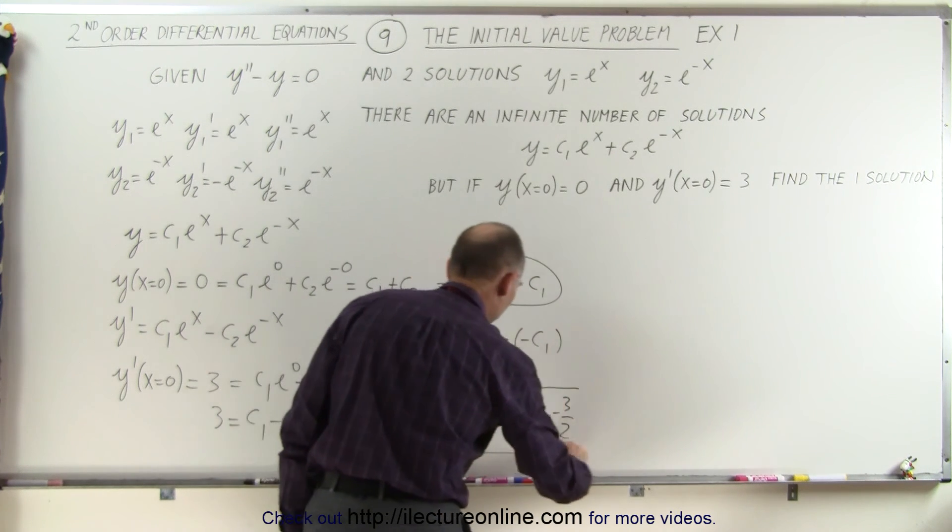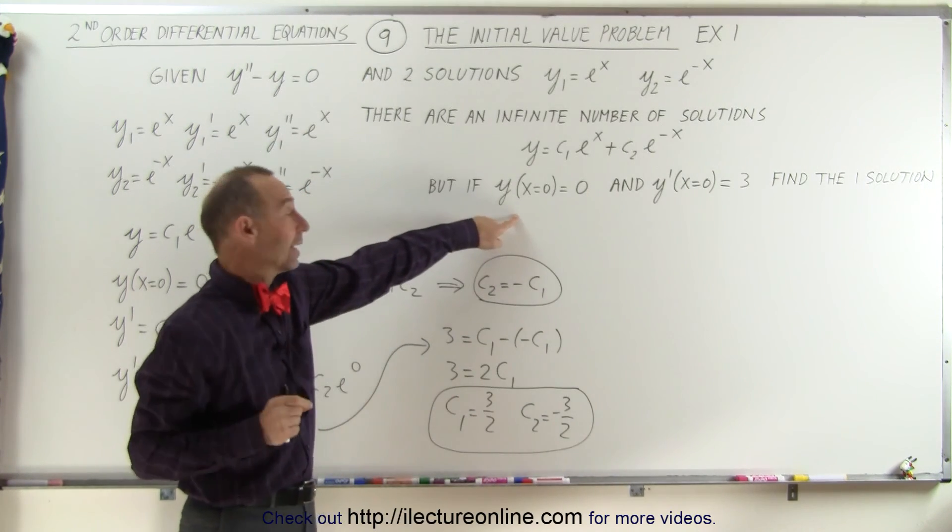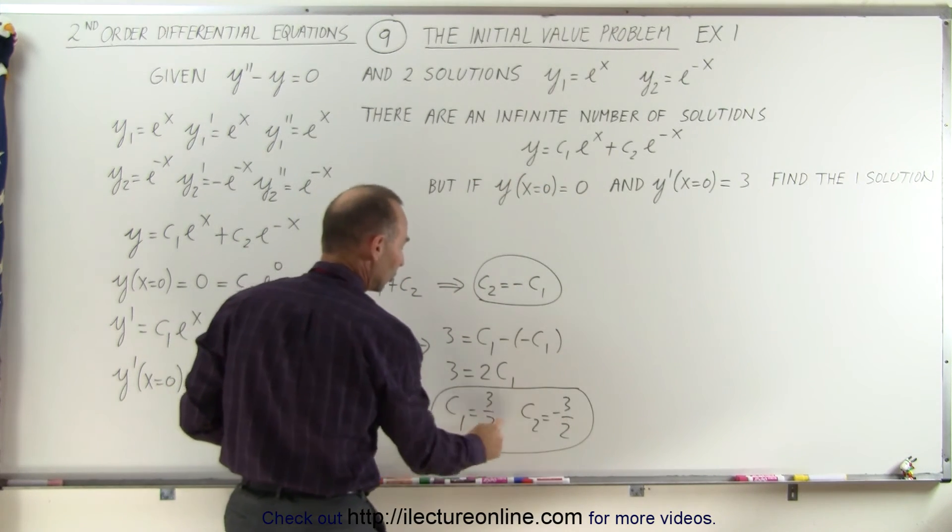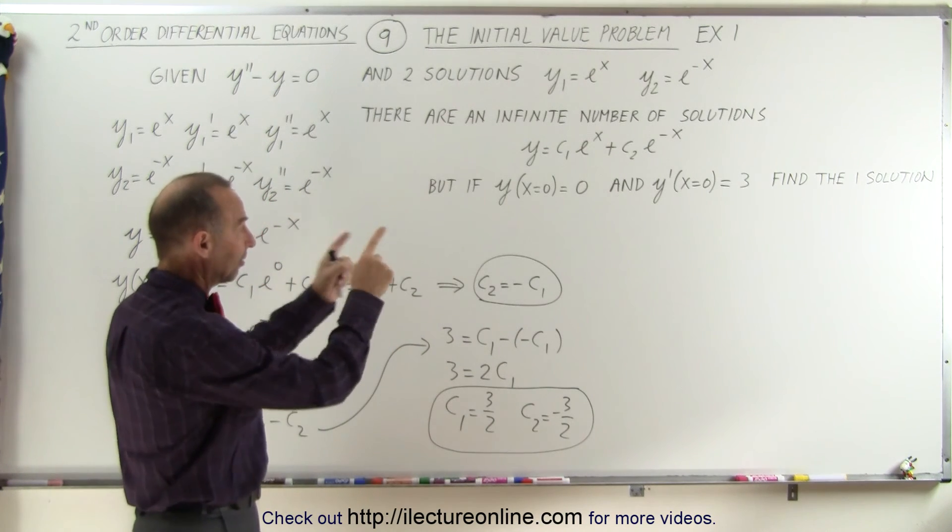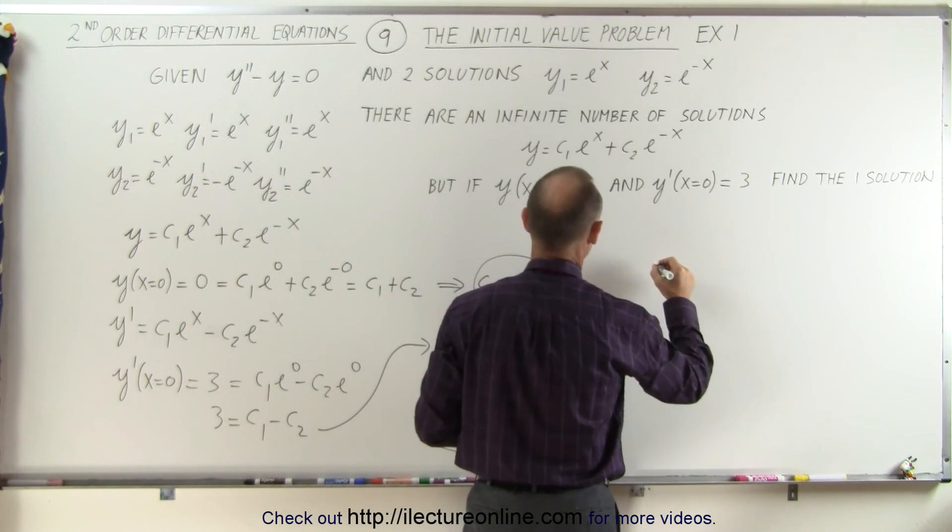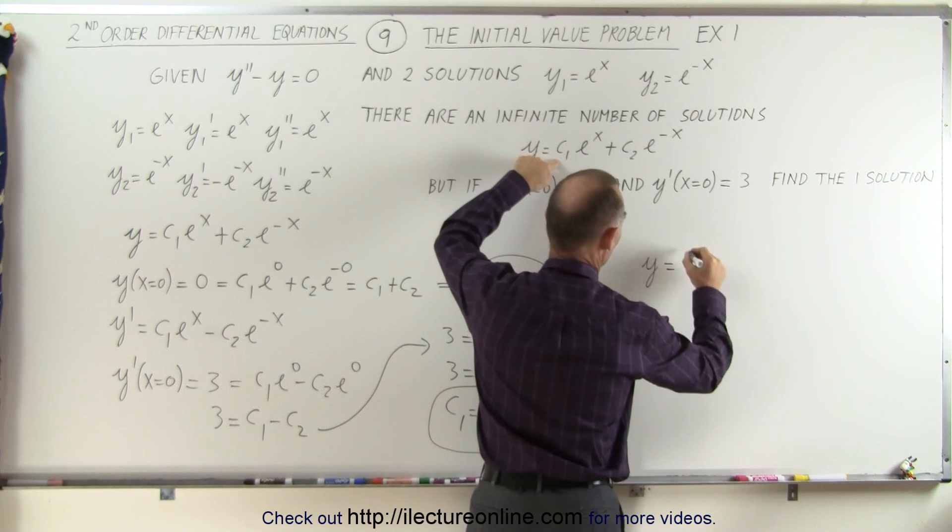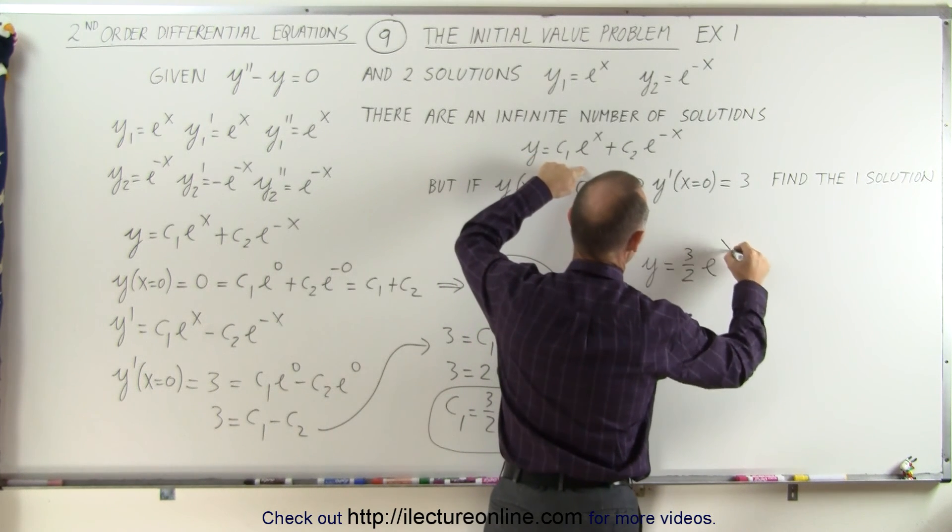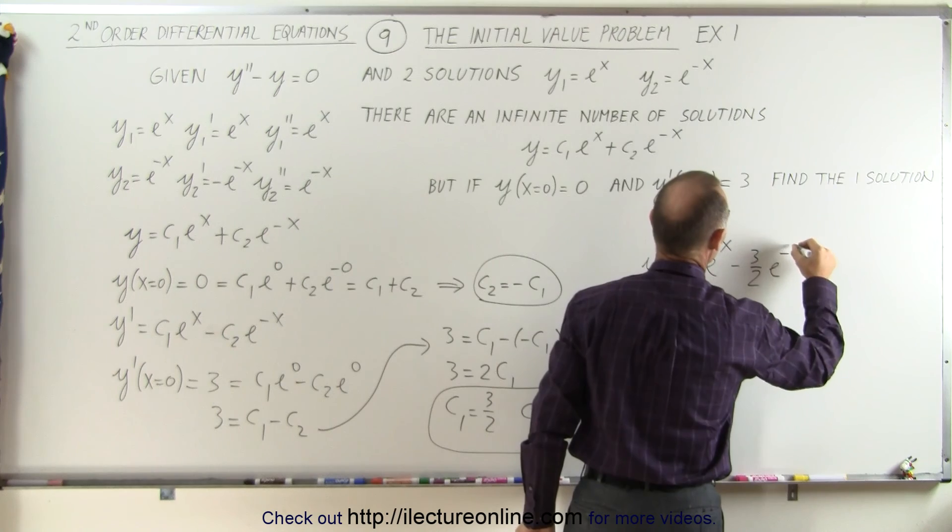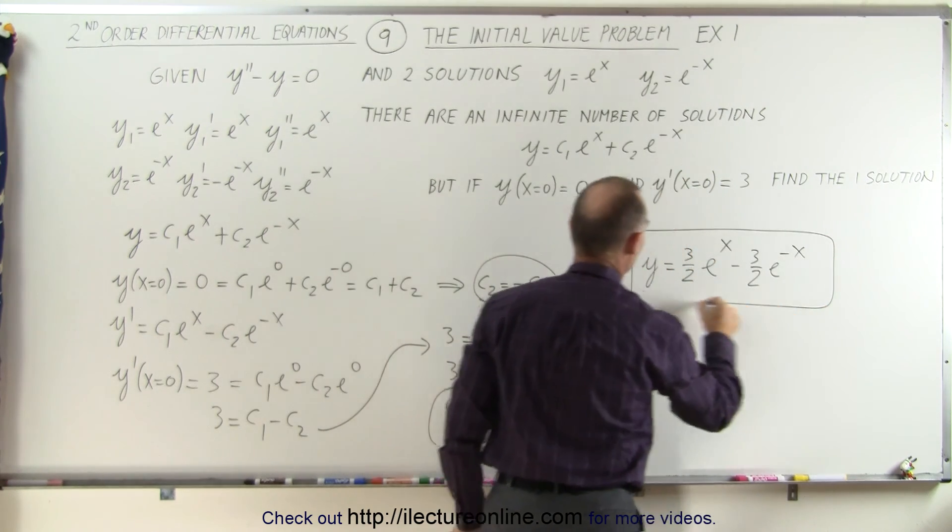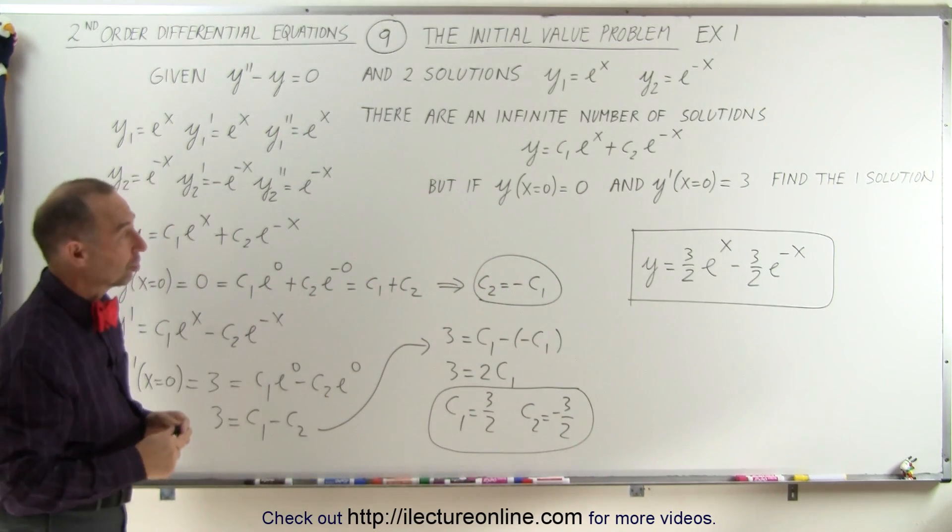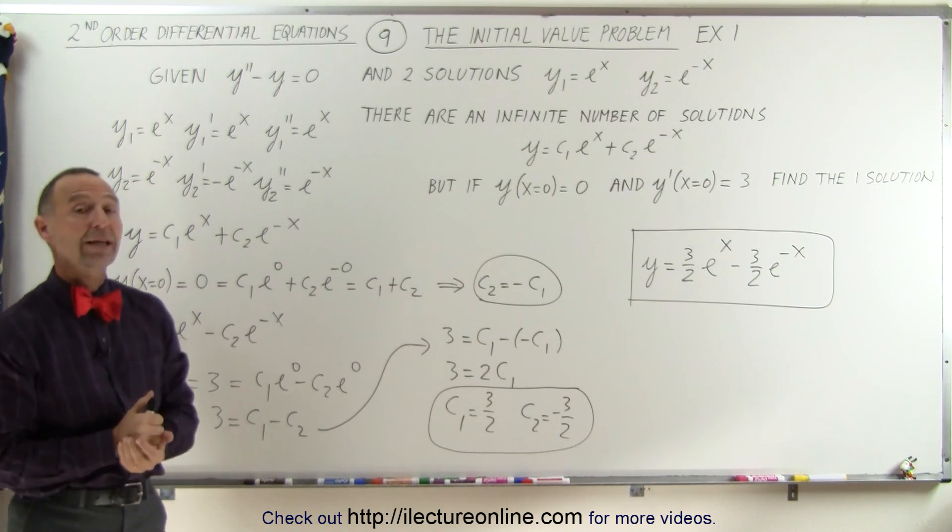Which means that with the two initial conditions, the function evaluated at x equals 0 and the derivative of the function evaluated at x equals 0, I'm able to find the actual constants that give us that one unique solution that satisfies those initial values. And that means I can now say that the one solution to that differential equation is y equals 3 over 2 e to the x minus 3 over 2 e to the minus x. And this is the unique solution of that differential equation using these initial values or initial conditions on the problem. And that's how we do initial value problems.